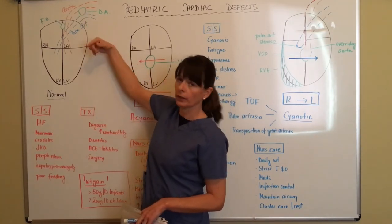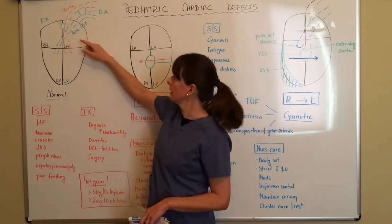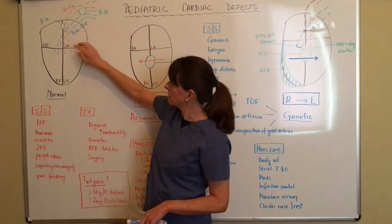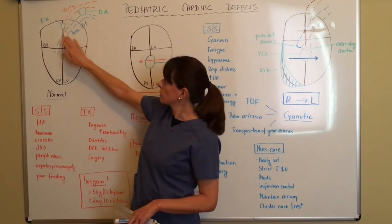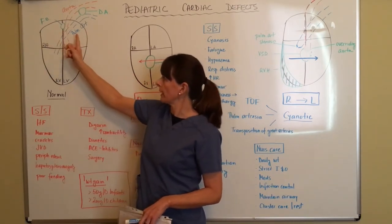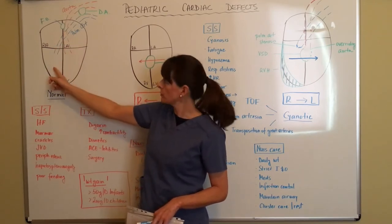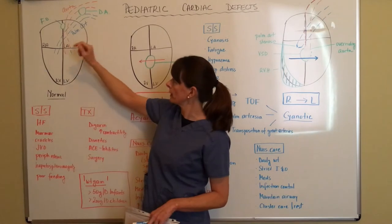The ductus arteriosus is an artificial opening or a normal fetal opening between the pulmonary artery and the aorta, which means because not all the blood is going to flow through the foramen ovale from the right atrium to the left, there will be some flowing down to the right ventricle and some circulation going out to the lungs.